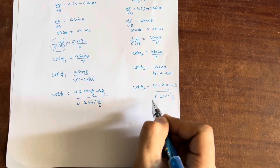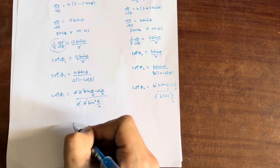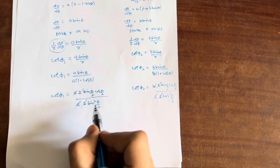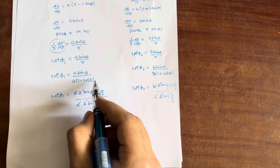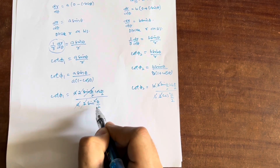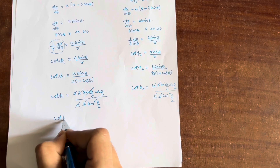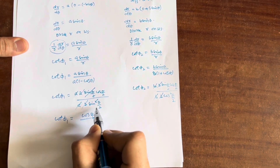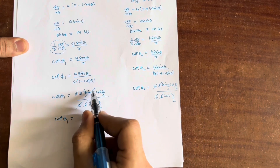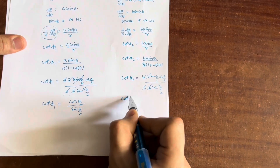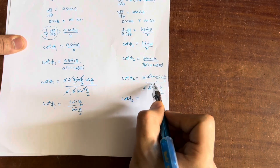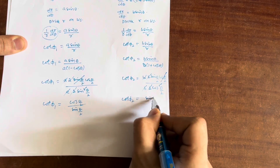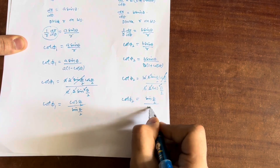After cancellation: for cot φ₁, one sin(θ/2) cancels with sin²(θ/2), leaving cos(θ/2) divided by sin(θ/2), which is cot(θ/2). For cot φ₂, one cos(θ/2) cancels with cos²(θ/2), leaving sin(θ/2) divided by cos(θ/2).